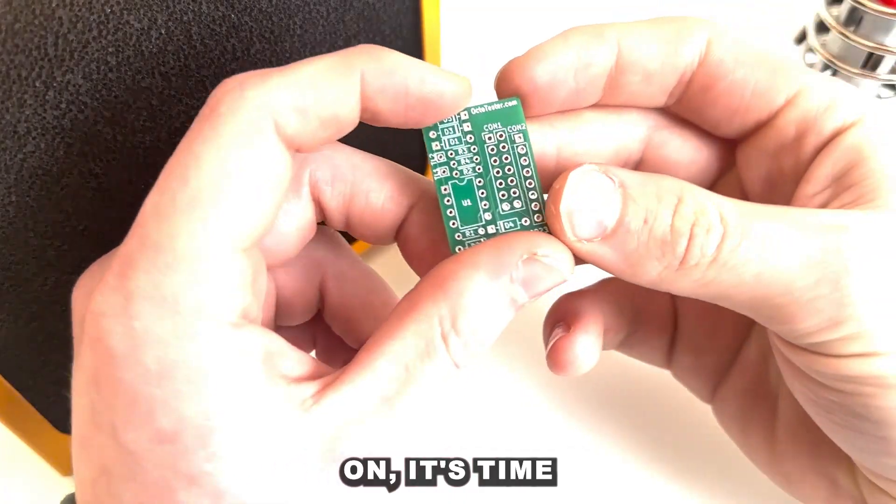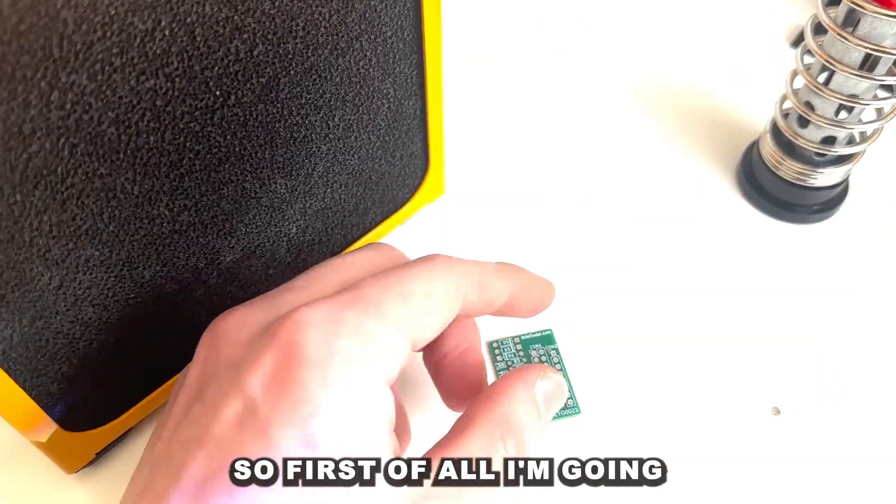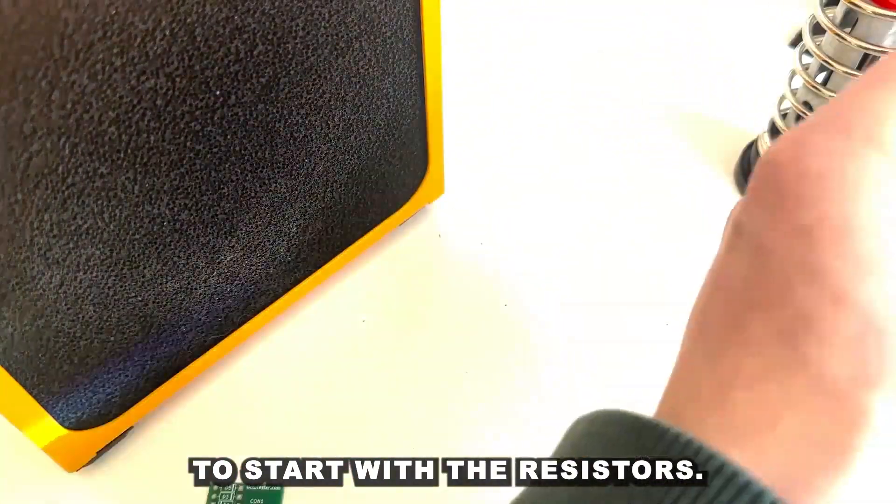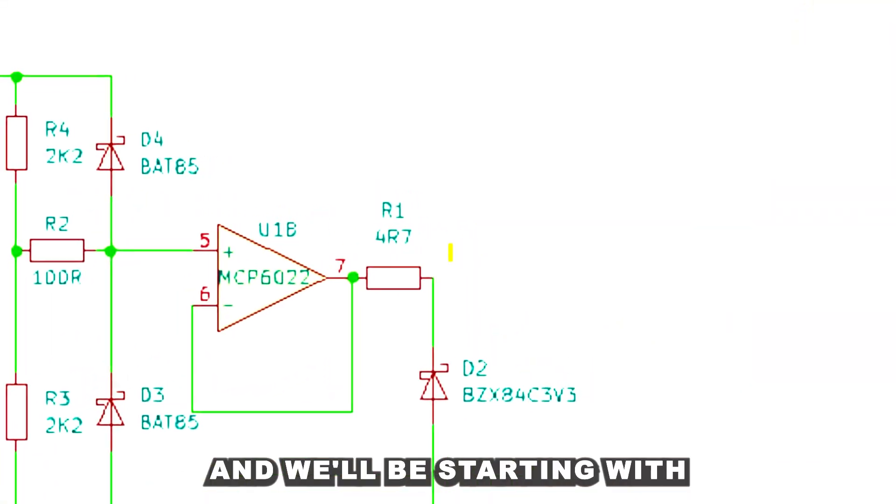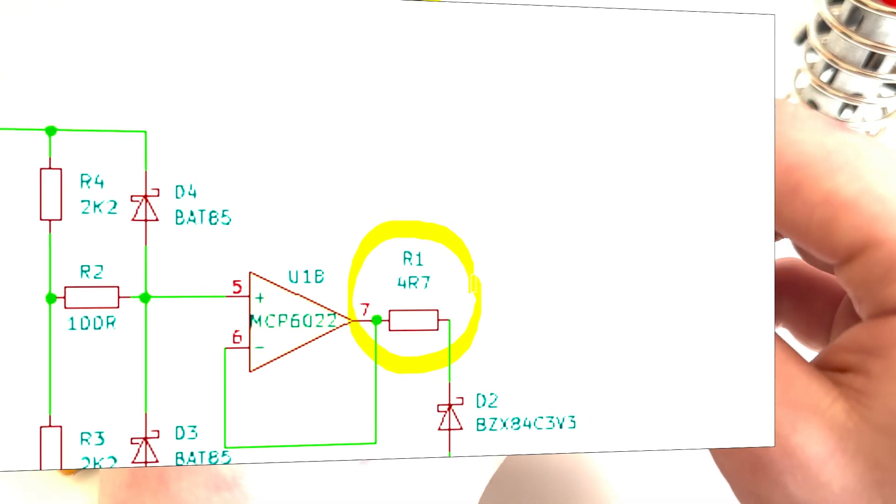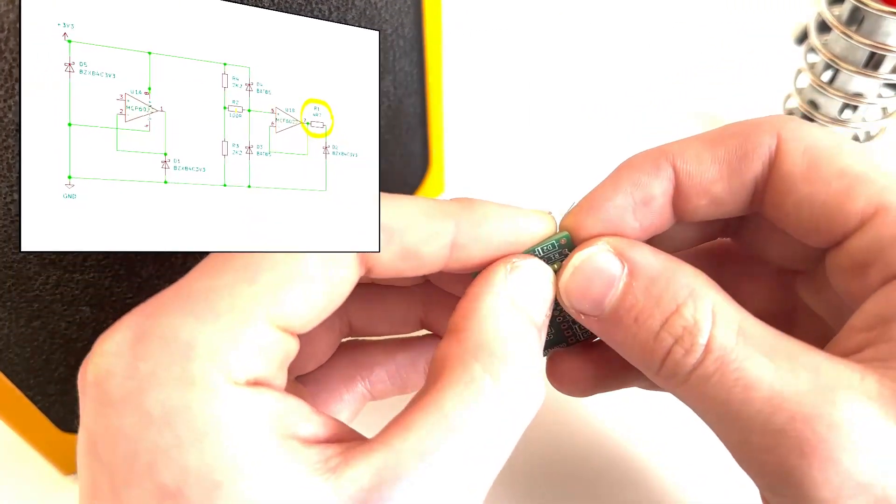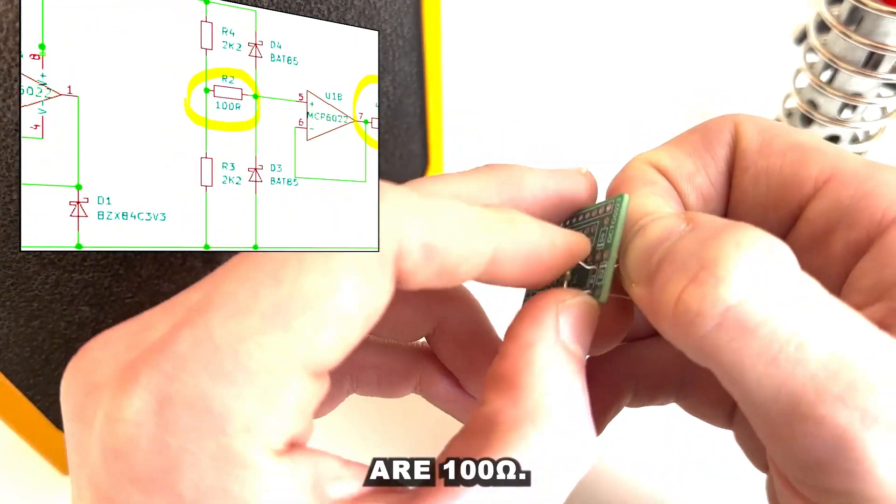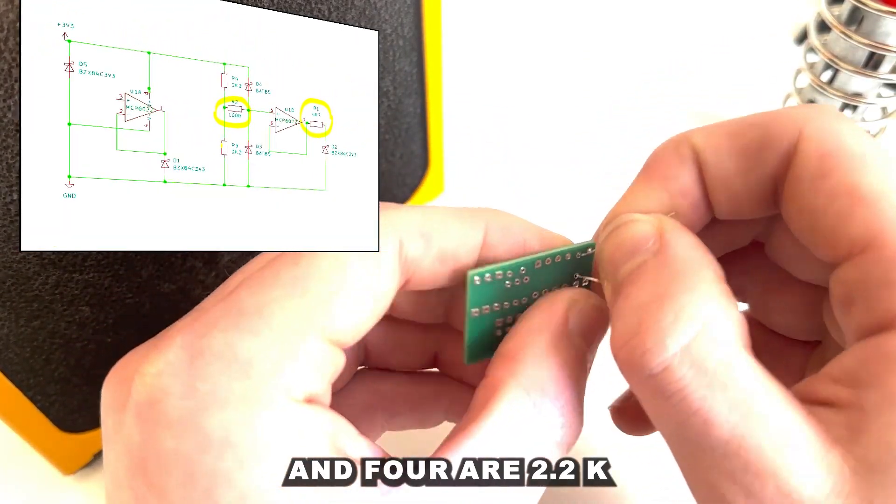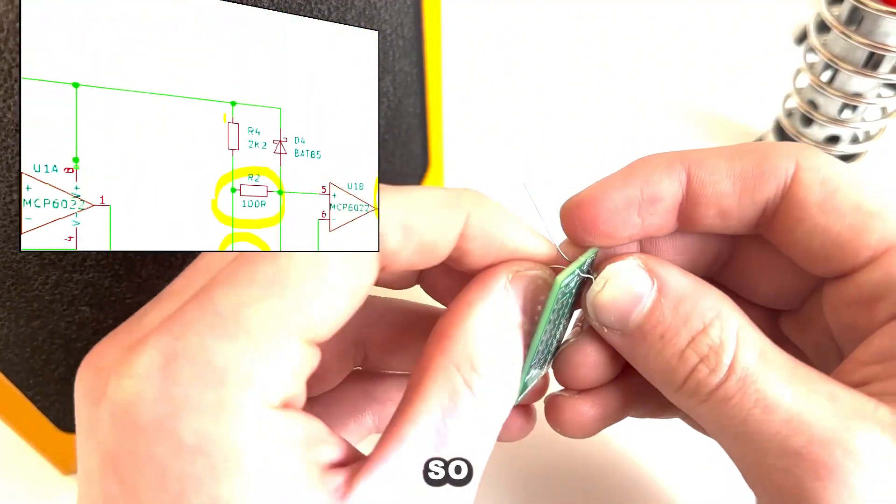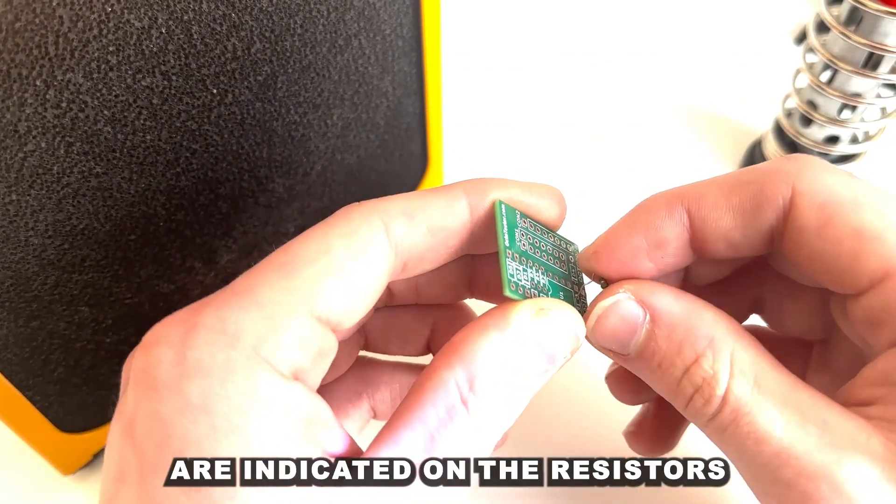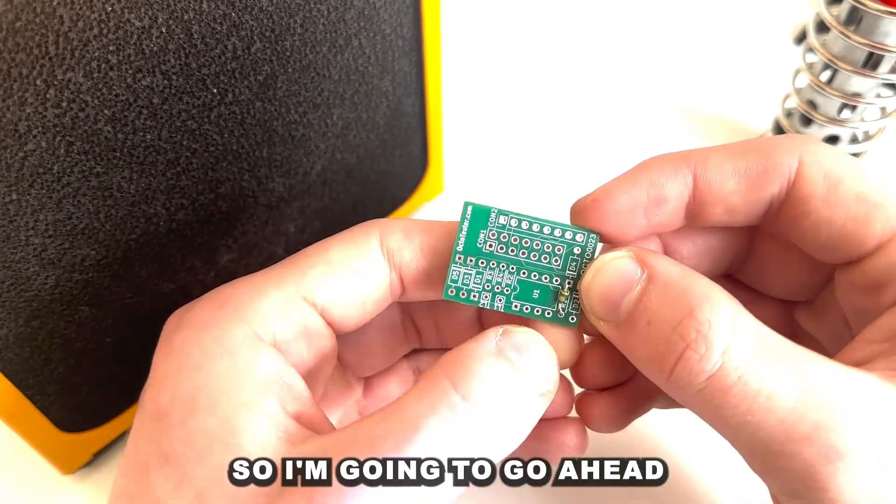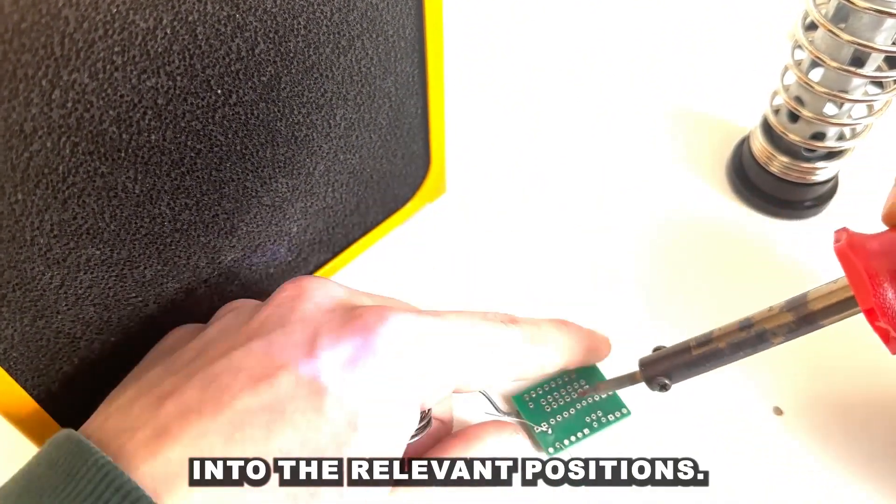Moving on it's time to solder up the circuit board. So first of all I'm going to start with the resistors, and here is the circuit diagram of our circuit and we'll be starting with the 4R7 resistor. R2 is 100 ohms and then R3 and R4 are 2.2k ohm resistors. The resistance values are indicated on the resistors' colour bands. Right so I'm going to go ahead and solder these into the relevant positions.